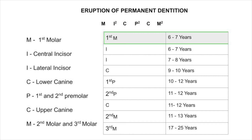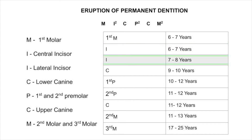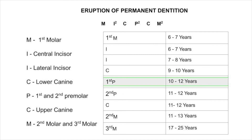The first molar erupts during six to seven years, and the central incisor also erupts during six to seven years. The lateral incisor erupts at seven to eight years, and the lower canine erupts during nine to ten years.